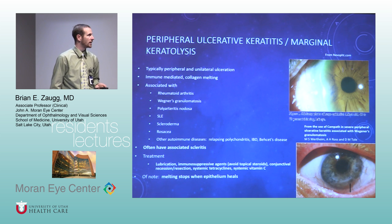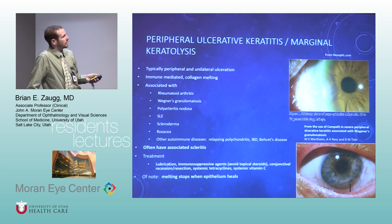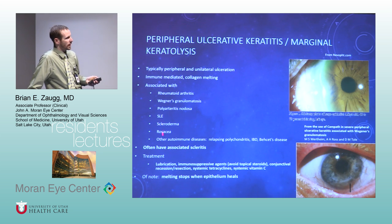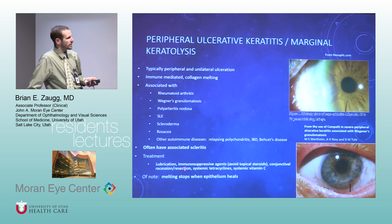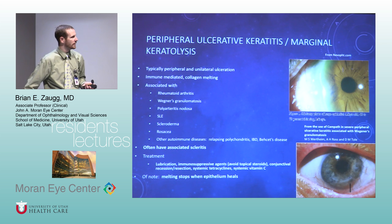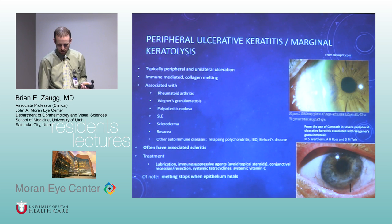Peripheral ulcerative keratitis (PUK): usually unilateral, right at the limbus, peripheral, and immune mediated — the collagen is actually melting, causing actual thinning of the cornea. Most commonly associated with rheumatoid arthritis and other autoimmune problems. Often there's adjacent scleritis. Treatment requires systemic immunosuppression. Topical steroids may help local inflammation, but this is mostly systemic treatment. The epithelium healing means you're out of the woods, but these can spontaneously perforate.